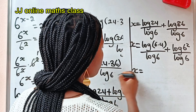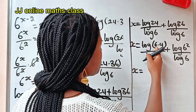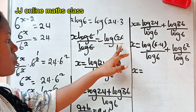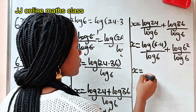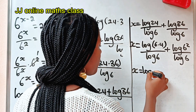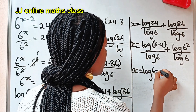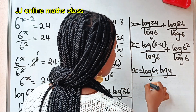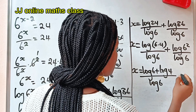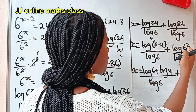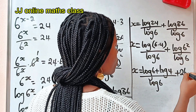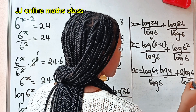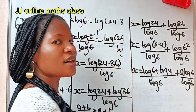So we have log of 6 squared divided by log 6. Expanding the first term in the same manner, we get log 6 plus log 4 divided by log 6. Then the second term gives us 2 log 6 divided by log 6.